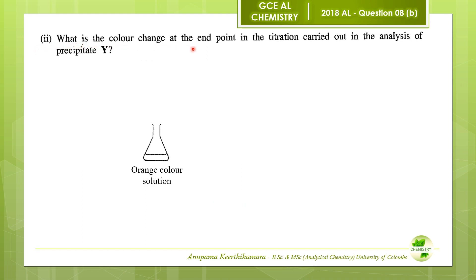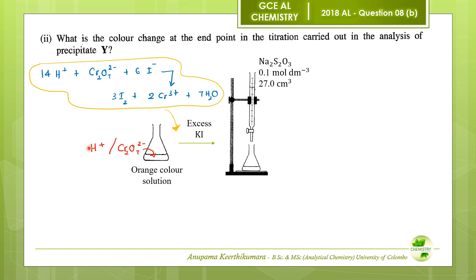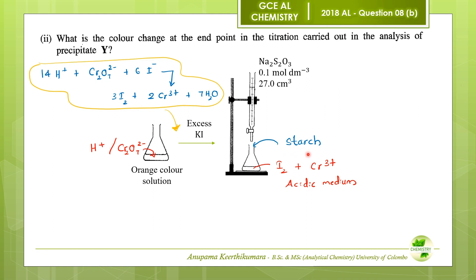Question number two: what is the color change at the end point in the titration carried out in the analysis of precipitate Y? Initially, dichromate ions were present in acidic medium, giving an orange color. With the addition of excess potassium iodide, dichromate ions react with iodide ions and convert to Cr³⁺ and iodine. The solution contains iodine and Cr³⁺ in acidic medium. Starch was then added as indicator, turning the solution dark blue because starch and iodine form a dark blue complex. So the initial color before titration is blue.